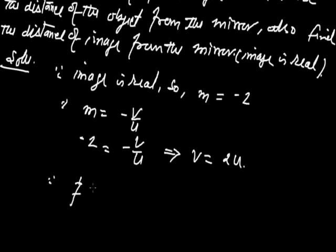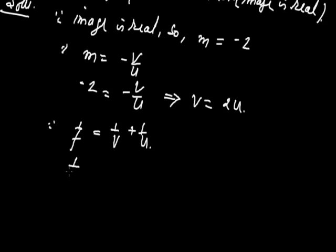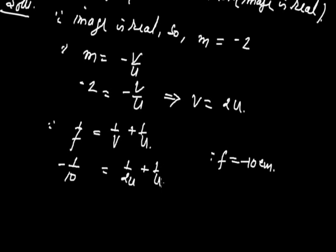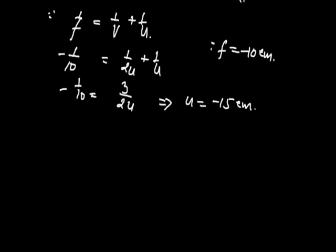By the mirror formula, 1 upon F equals 1 upon V plus 1 upon U. So minus 1 upon F equals 1 upon 2U plus 1 upon U, which gives 3 upon 2U. So minus 1 upon 10 equals 3 upon 2U, which implies the value of U is minus 15 cm.